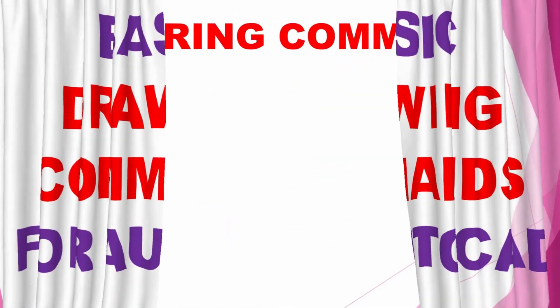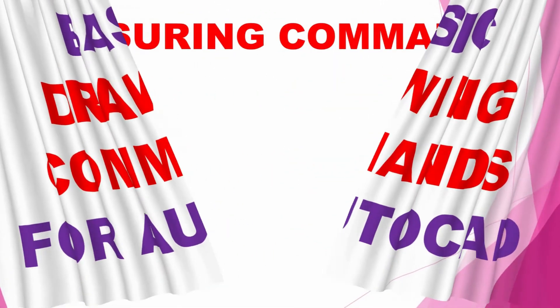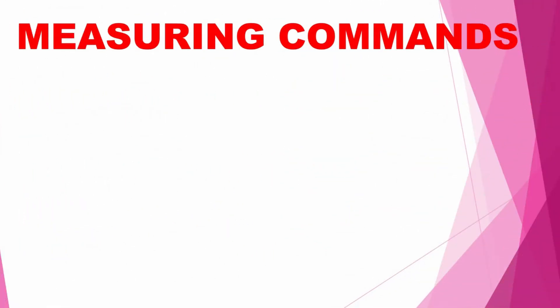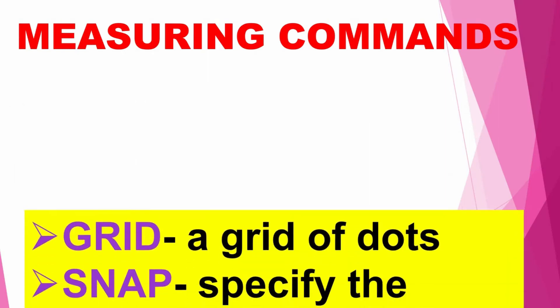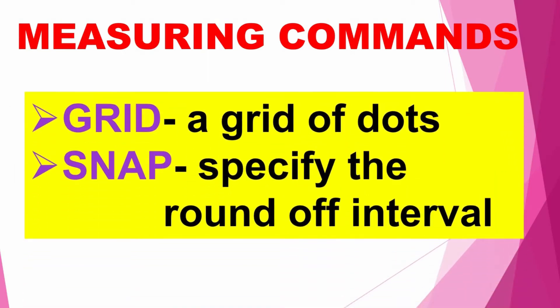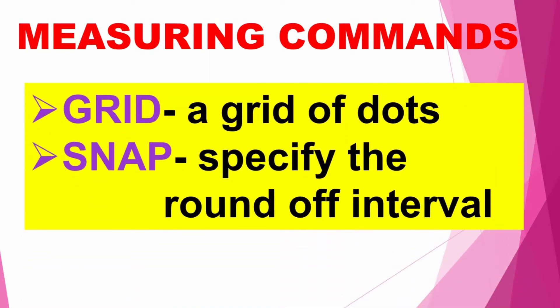We have the measuring commands. Measuring commands are composed of Grid, which displays a grid at the desired spacing on the screen, and Snap, which specifies rounding intervals so that points entered with the mouse can be locked into alignment with the grid spacing.